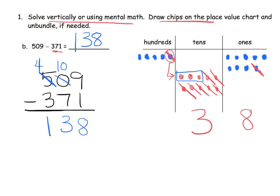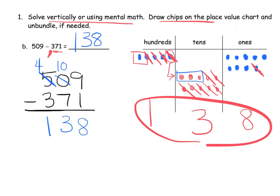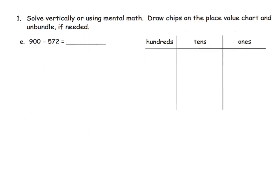That unbundled hundred is gone, so we're left with 4 hundreds. It says to take away 3 hundreds — 1, 2, 3 — and that leaves us with just 1 hundred left over. Using two different methods, our answer is 138.